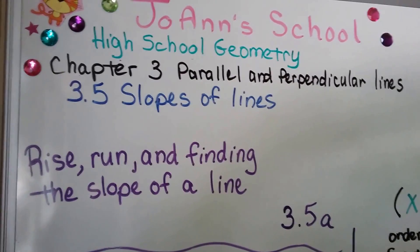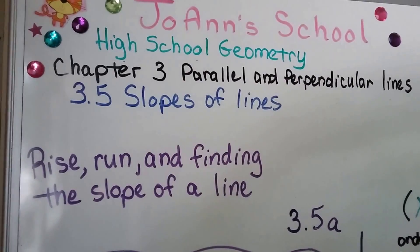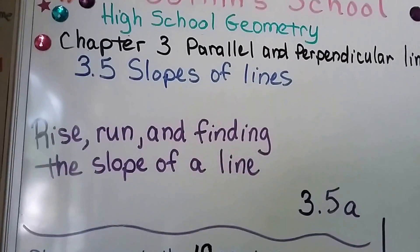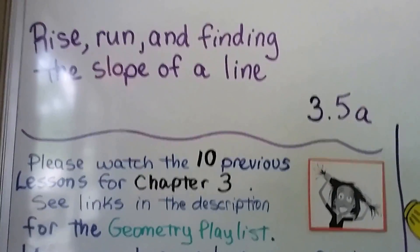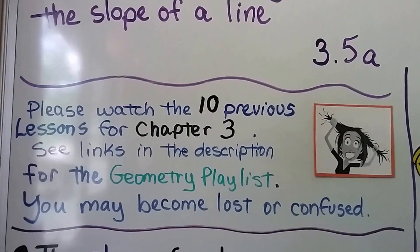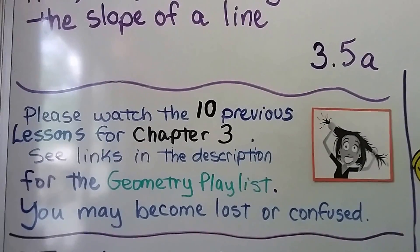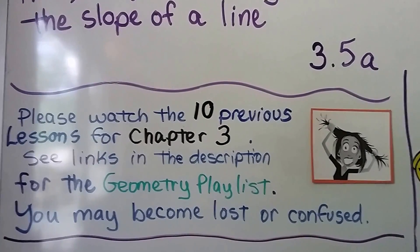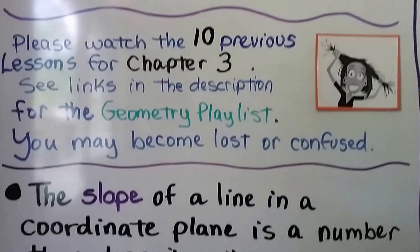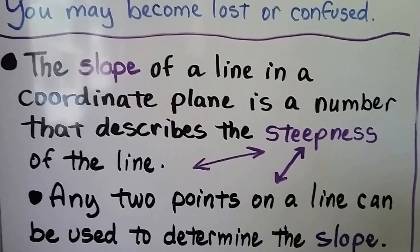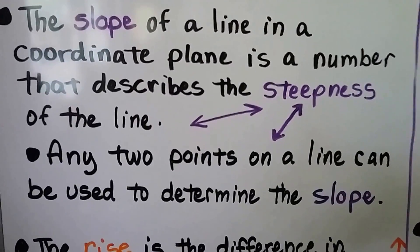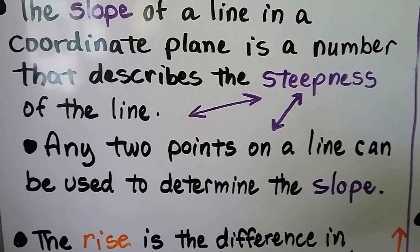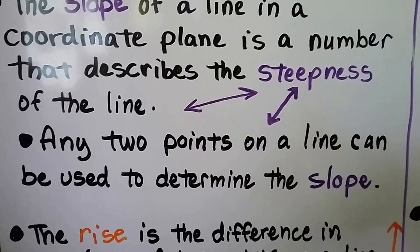Rise, run, and finding the slope of a line. This is Lesson 3.5a in Geometry, and this whole lesson is about slopes. We've got 10 previous lessons for Chapter 3 that are linked at the end of the video as an end card or in the playlist. The slope of a line in a coordinate plane is a number that describes the steepness of the line. It's how steep it is, like how steep is a hill or a mountain.